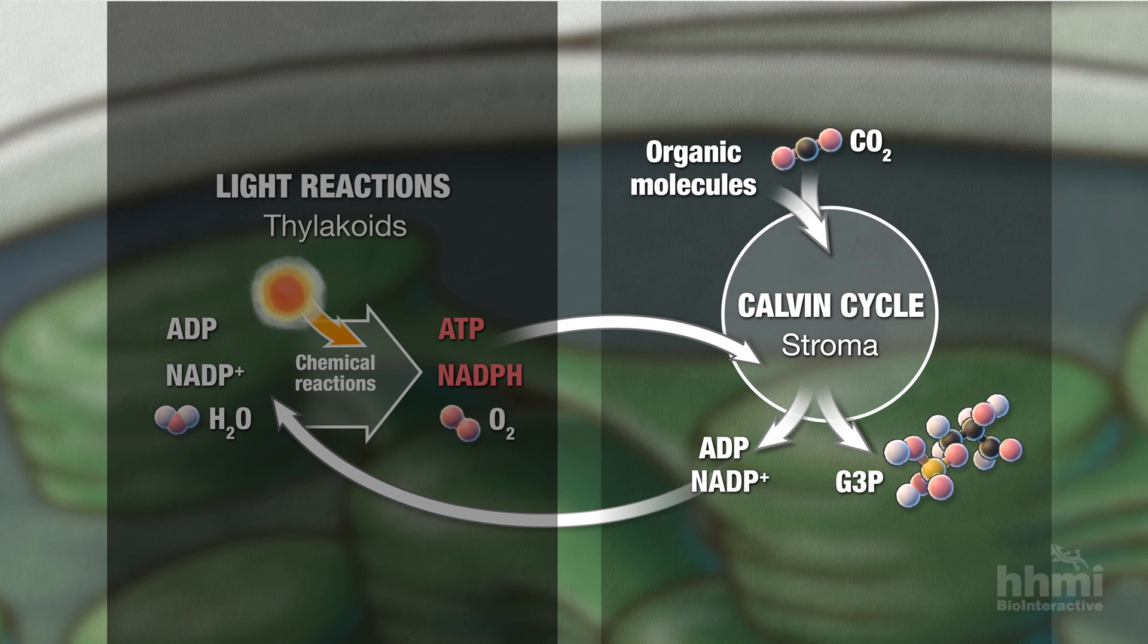The Calvin cycle takes place in the chloroplast's stroma, the watery clear fluid surrounding the thylakoids.